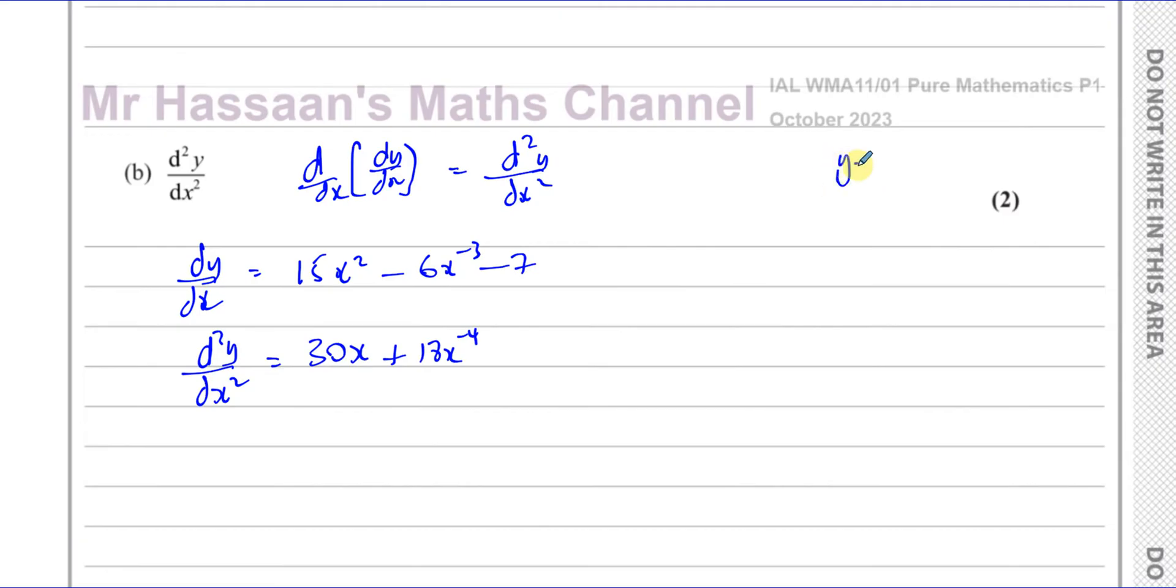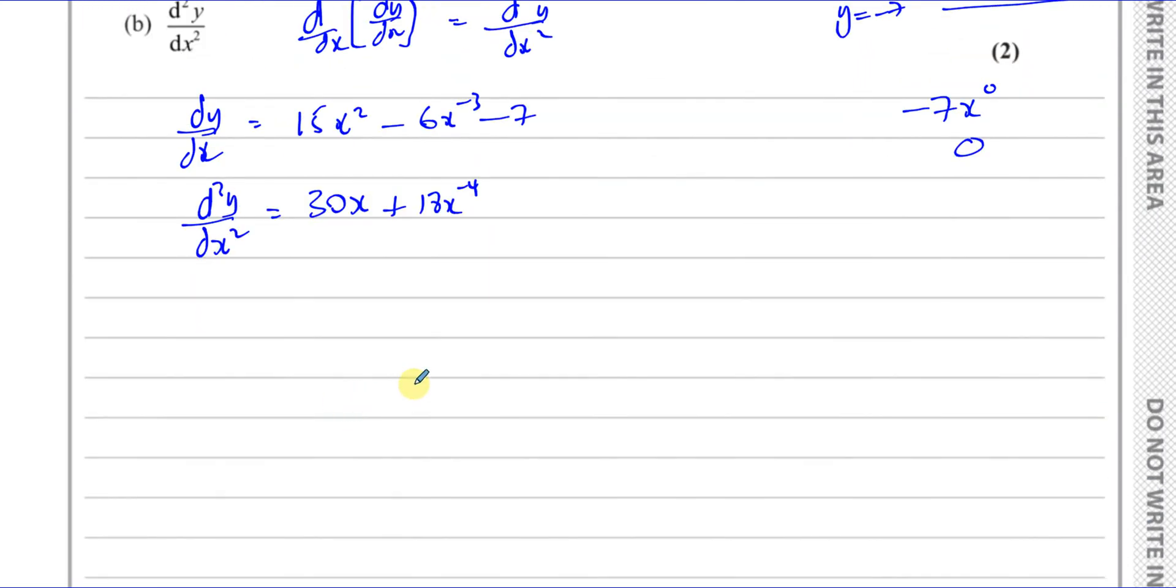Any constant differentiated becomes 0. You can think of it in two ways. Like the function y equals minus 7 is just a horizontal line which has a 0 gradient. So the gradient function of this will be 0. Or you can think of it as minus 7x to the power of 0. Multiply by the power, the whole thing becomes 0. So you end up with d squared y dx squared.